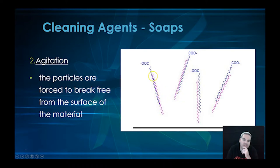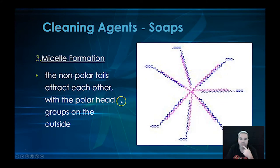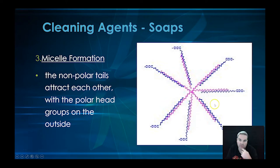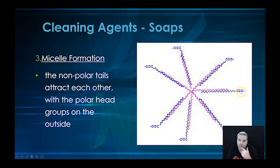Now these particles are all non-polar, and all around them are polar water molecules — so these non-polar tails are hating the polar water molecules around them and will attract each other. That's what we call micelle formation. In the middle we've got all the non-polar tails clustered together, creating a big non-polar section. Around the outside — sorry the picture isn't so great, I used a program to draw these and the quality of the pictures came out not that great — are your carboxyl head groups, your COO⁻.